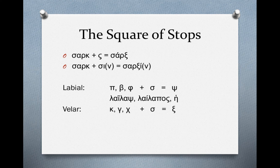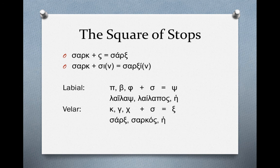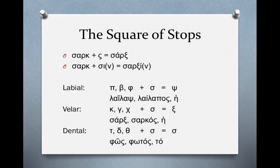There's also the velar category — letters you use your throat to pronounce: kappa, gamma, and chi. When these meet sigma, they form xi. So we have sarx from sark- plus sigma. The third category is dental letters: tau, delta, and theta. Whenever these meet sigma, they become just a sigma — they simplify. A word that illustrates this is phōs, meaning 'light,' memorized as: phōs, phōtos, tau.